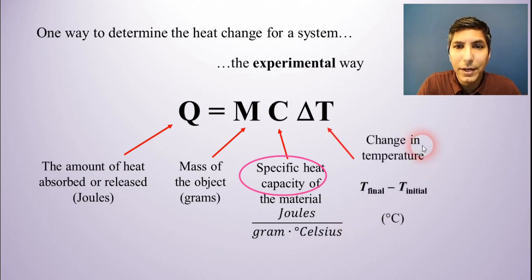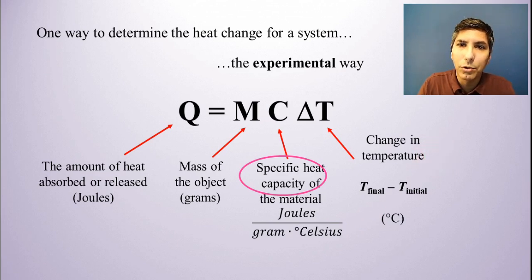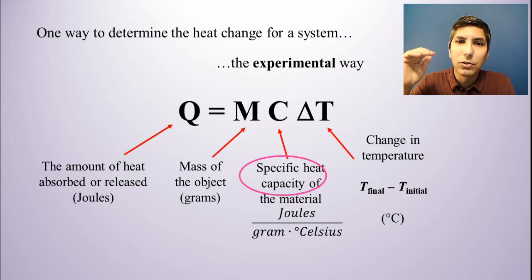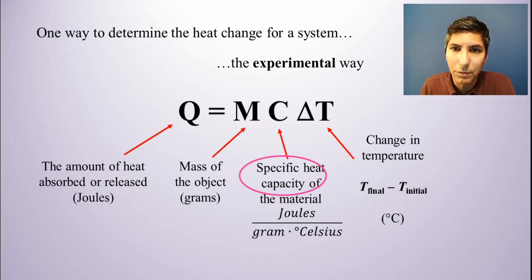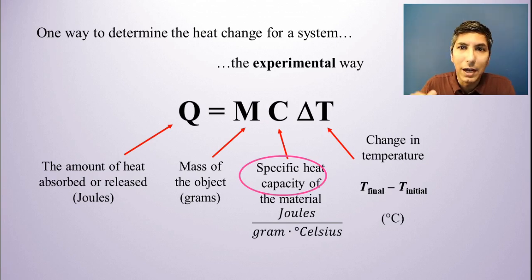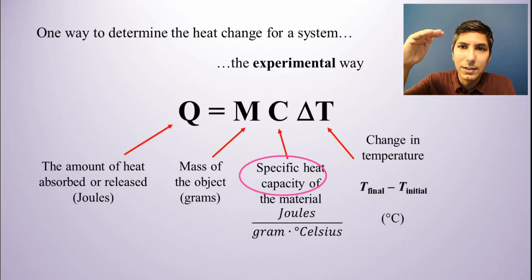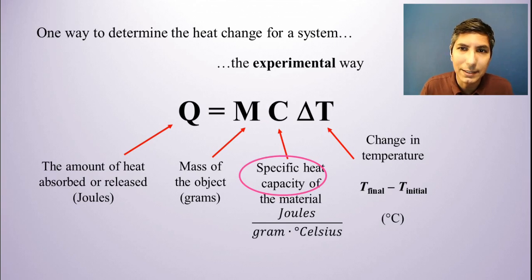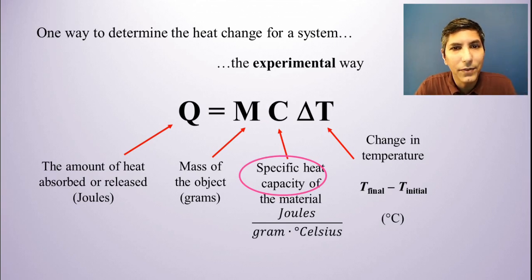Delta T is the change in temperature of the material. For example, if you're going from 10 degrees to 30 degrees, that's a change of positive 20 degrees — it's just final minus initial temperature. If it goes from 50 degrees to 100 degrees, that's a change of positive 50 degrees. If the temperature goes from 70 degrees down to 10 degrees, that's a delta T of negative 60. If the temperature drops, you have to realize that that is a negative delta T.